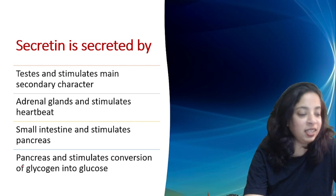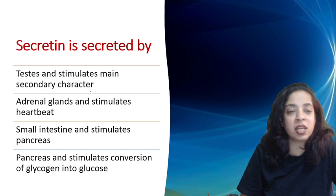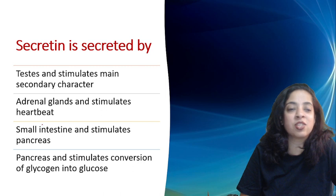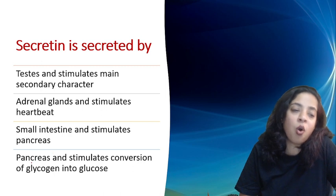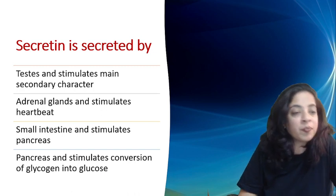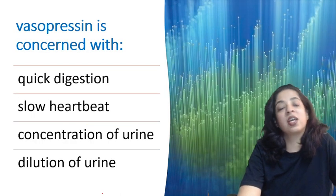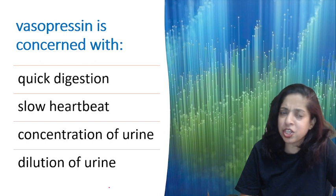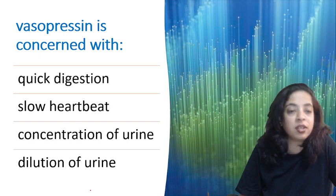Secretin is secreted by: testis, adrenal glands, small intestine, or pancreas? The answer is it is secreted by the small intestine and stimulates the pancreas. Vasopressin is concerned with: quick digestion, slow heartbeat, concentration of urine, or dilution of urine? The answer is concentration of urine.